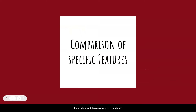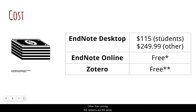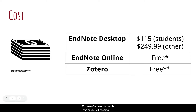Let's talk about these factors in more detail. Cost is important for a lot of us. EndNote Desktop is currently $115 for students and $249.99 for all others; other than pricing, the versions are the same. Part of what you are paying for is robust customer support. EndNote Desktop can be used with EndNote Online, or you can use just one or the other. EndNote Online, on its own, is free but has fewer features than EndNote Desktop. Zotero is free unless you need additional storage space, which will cost you an annual fee.